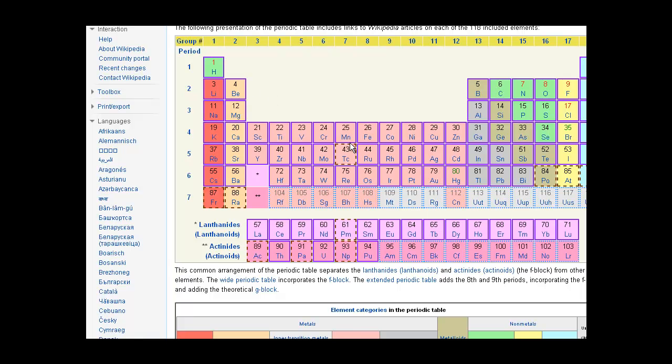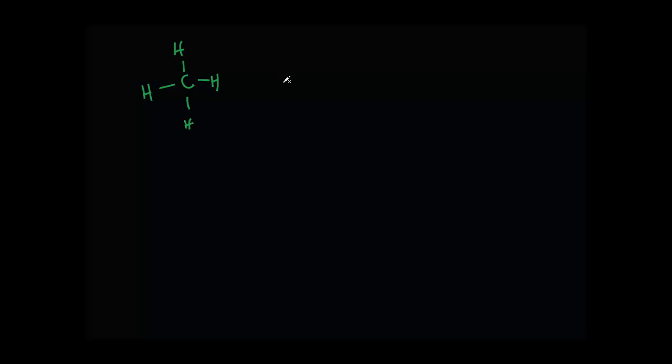Let's take another example: methane. With methane CH4, it's going to have four bonds surrounding the carbon. If you want to understand what's going on, go back to the groups in the periodic table. Carbon is in group 4, which means it has 4 valence electrons. Hydrogen is in group 1, so it has 1 valence electron. Carbon has 1, 2, 3, 4 valence electrons.